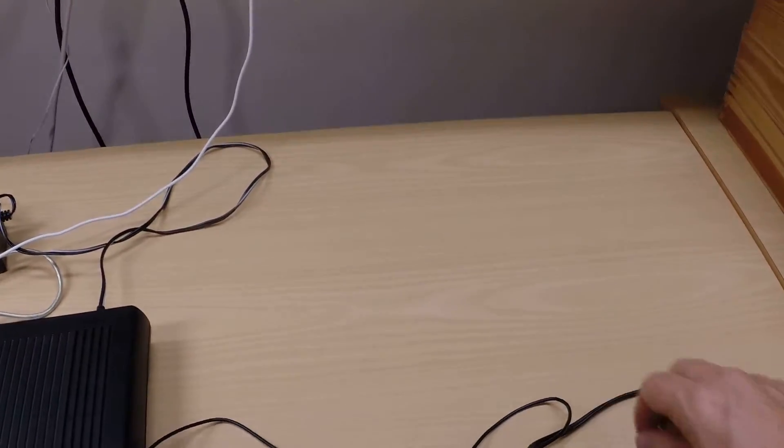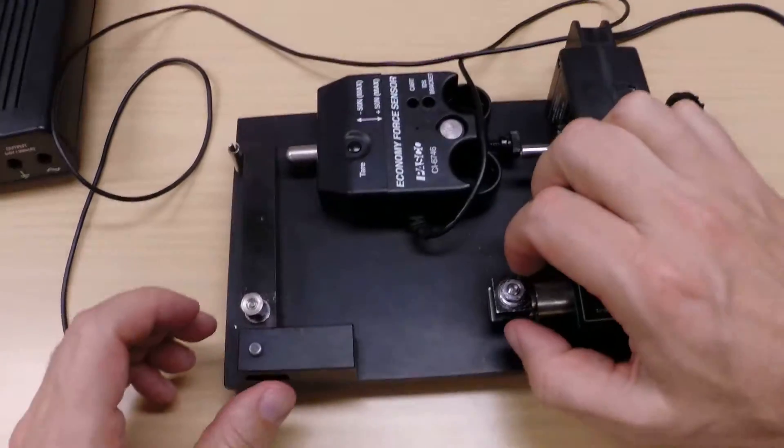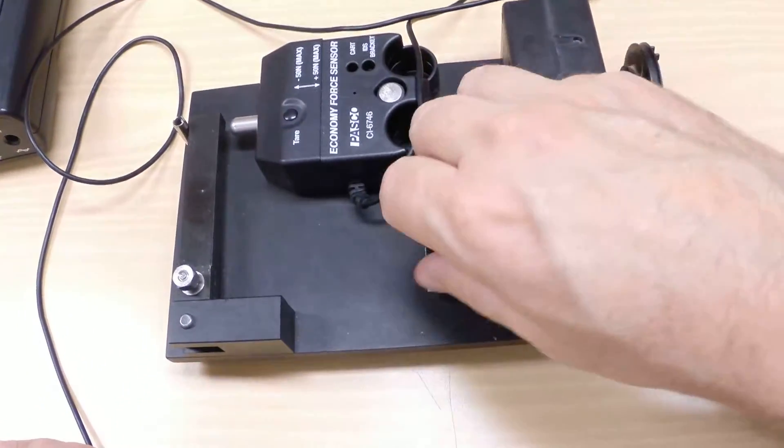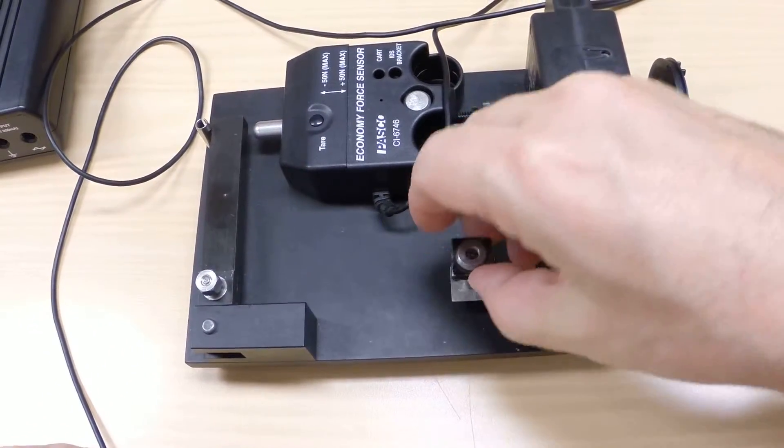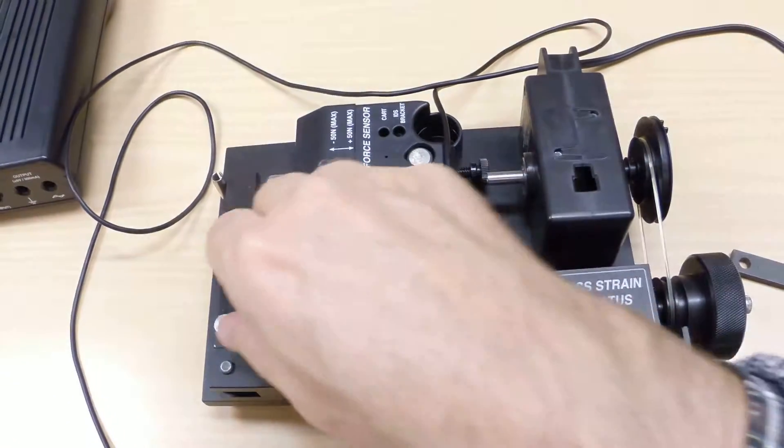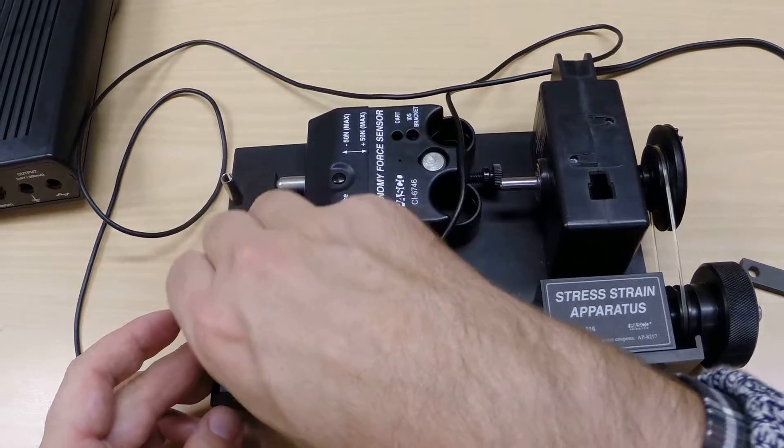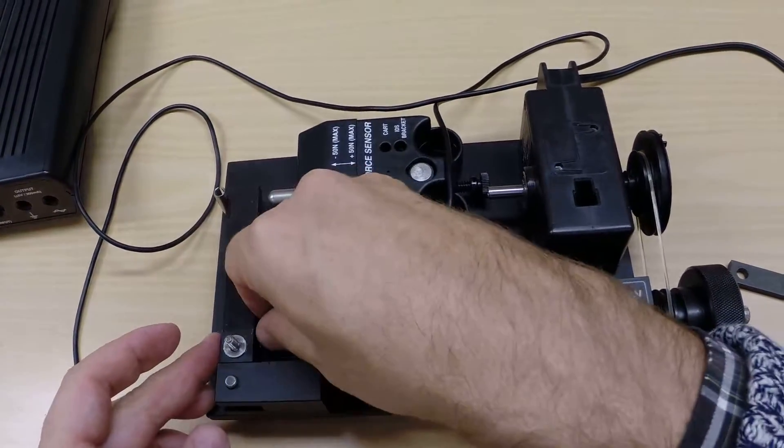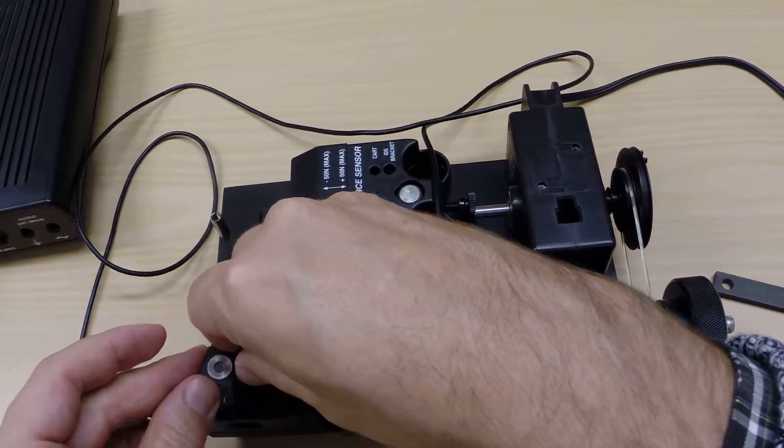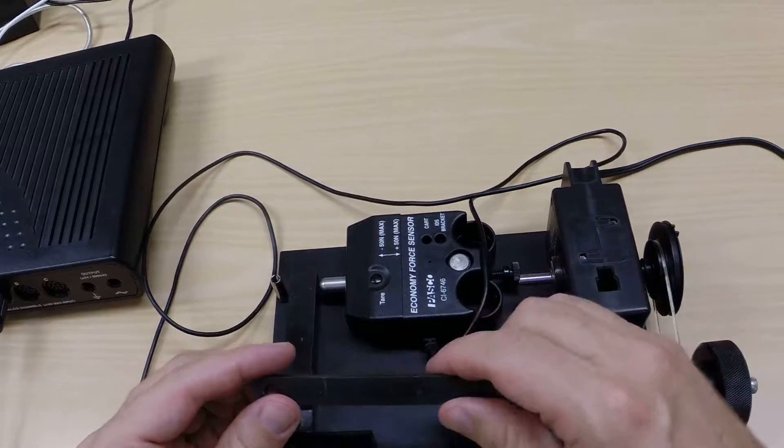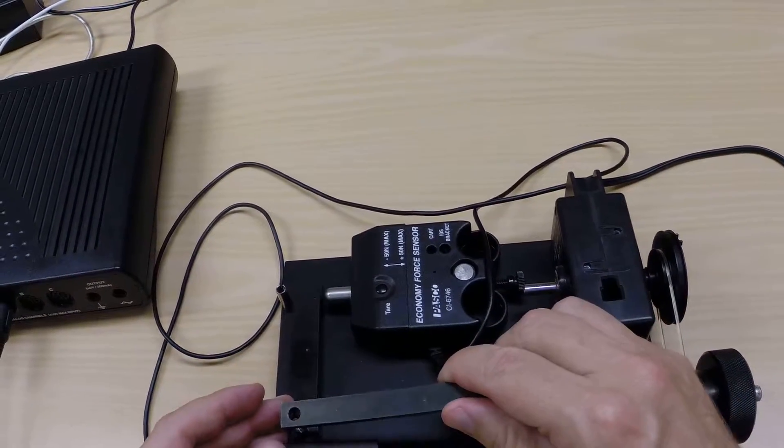The first thing we will do is take away these clamps for the coupons because to start with we will calibrate and test our setup using the calibration bar, the steel calibration bar that doesn't deform much.